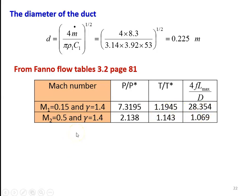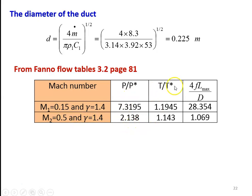Note that 0.15 may not be available directly in the table; 0.14 and 0.16 will be available, so we take the average of the values. Similarly, for Mach number M2 equal to 0.5 on the same page: P by P star equal to 2.138, T by T star equal to 1.143, and 4FL max by D equal to 1.069.